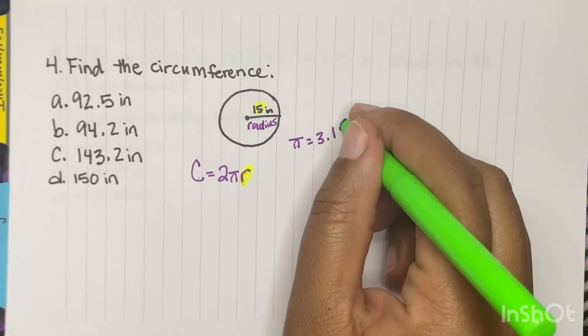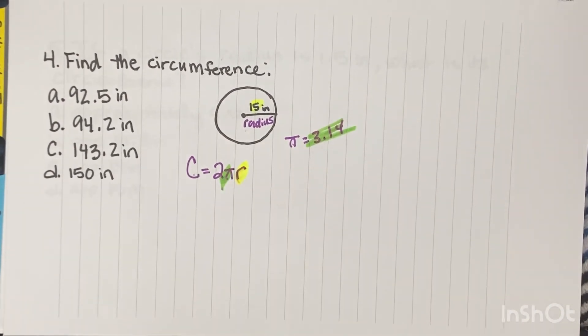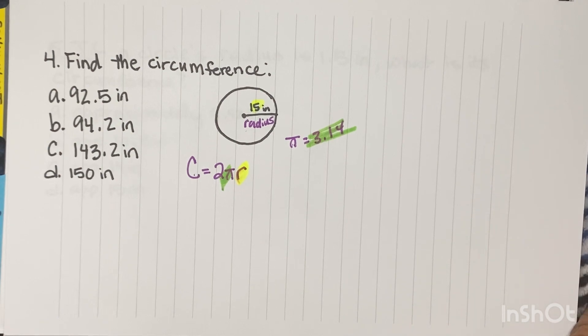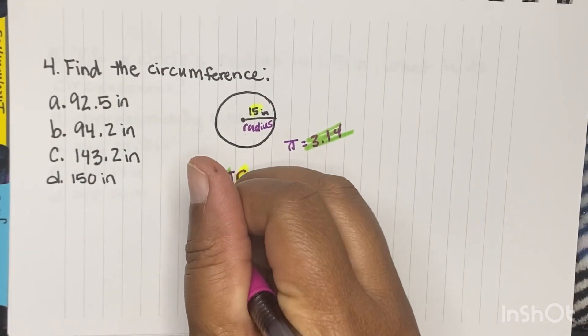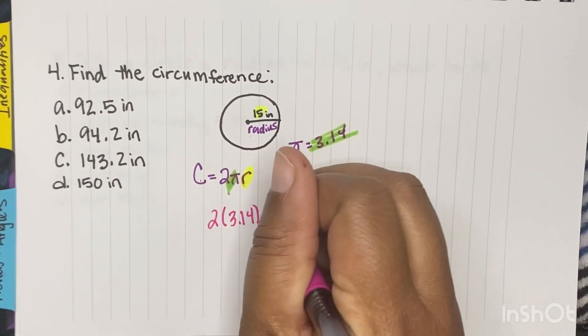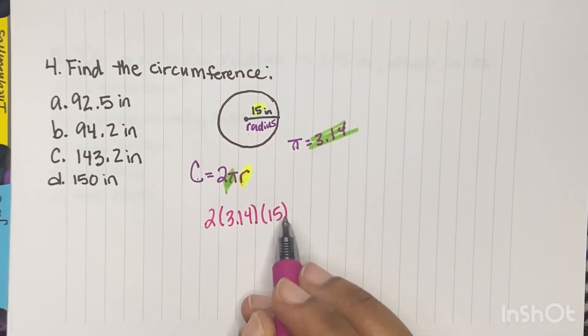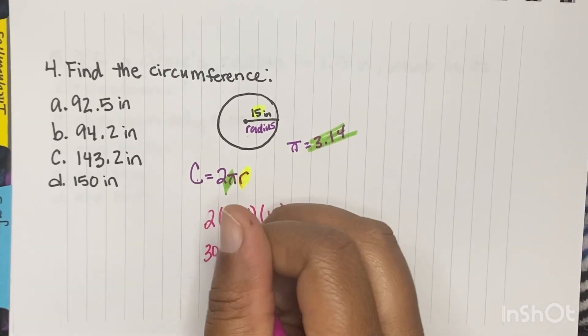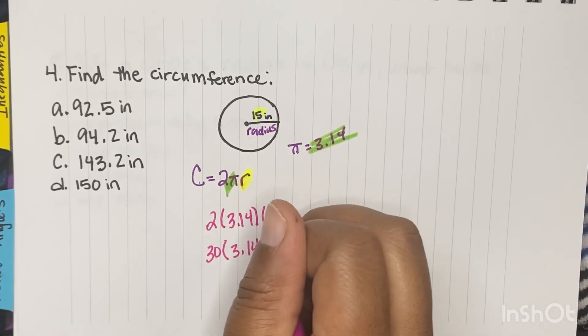And so we're going to plug in 15 here for the radius, and we're going to plug in this 3.14 in for pi. And then we're going to multiply it. So we're going to do 2 times 3.14 times 15. So 15 doubled is 30, and then we're going to times that by 3.14.